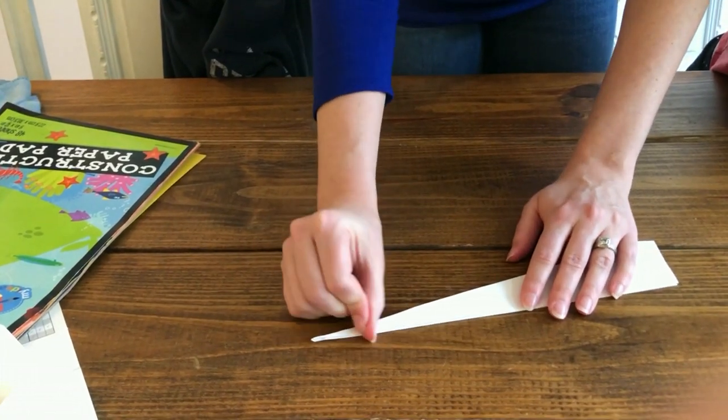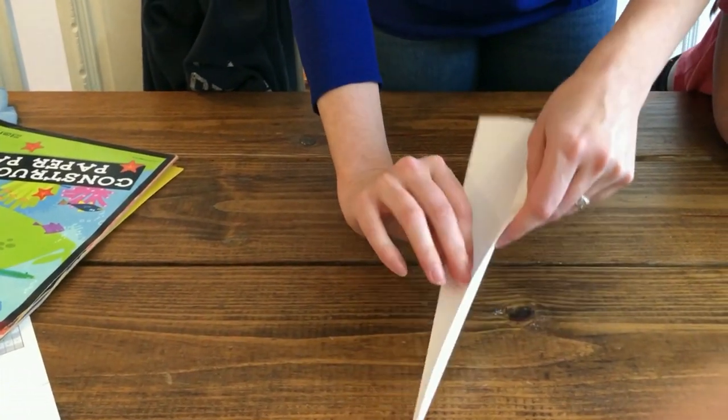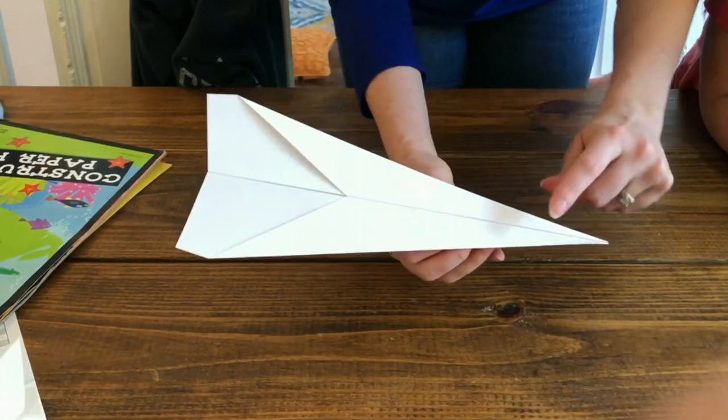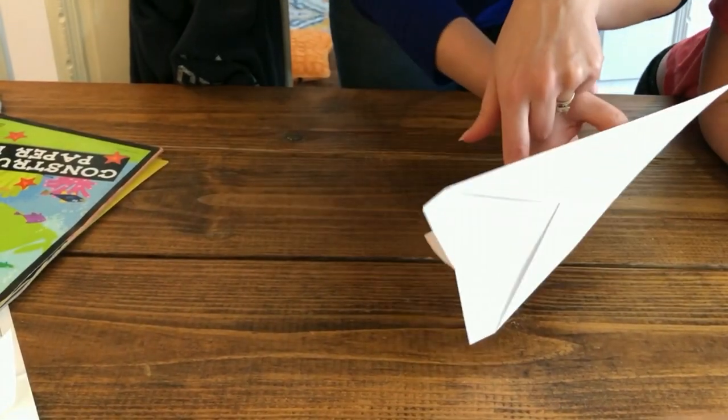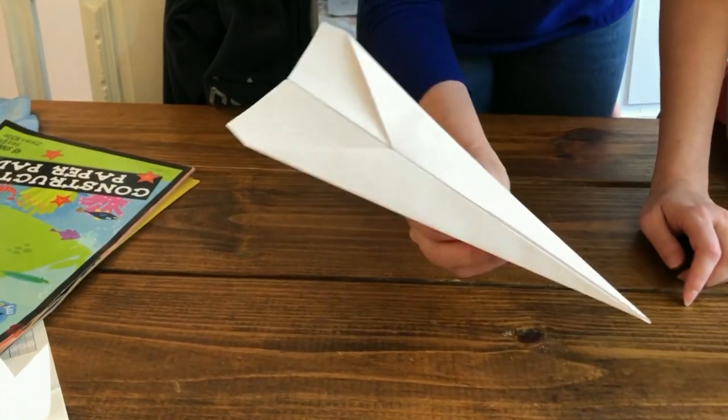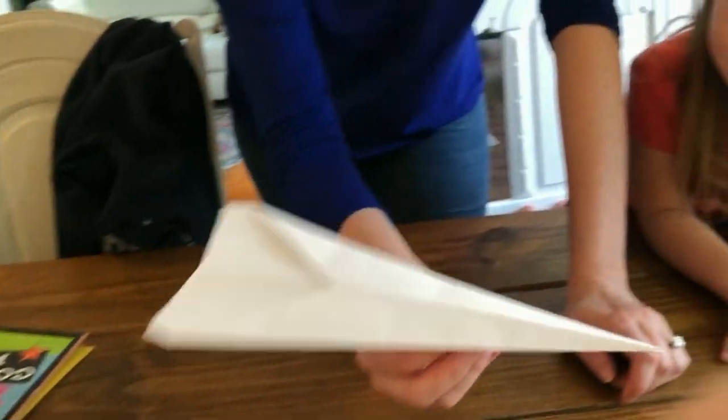So you're going to have two pennies that you have to tape onto your plane somewhere, and you need to decide if you're going to tape them here, if you're going to tape them on the bottom, if you're going to tape them on the back, and what's going to make this airplane fly the farthest distance.